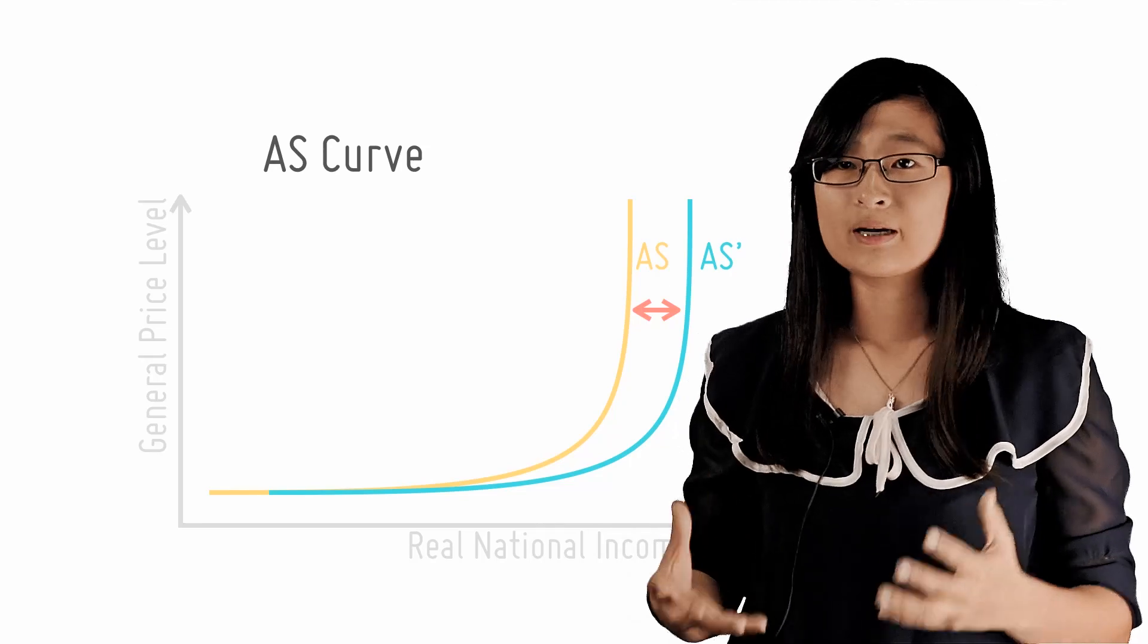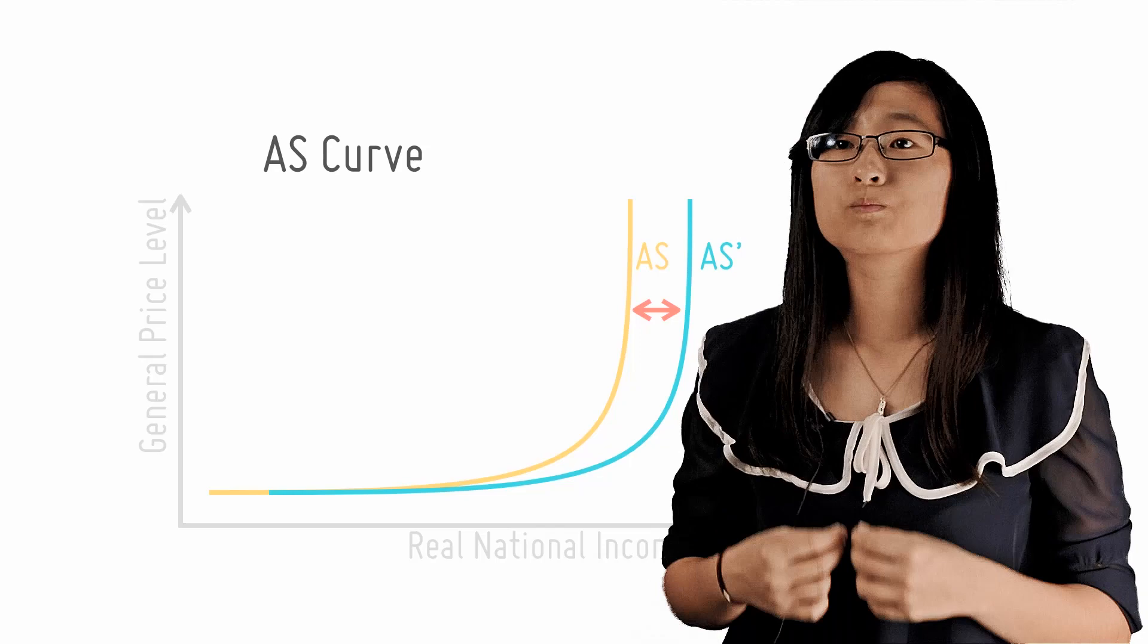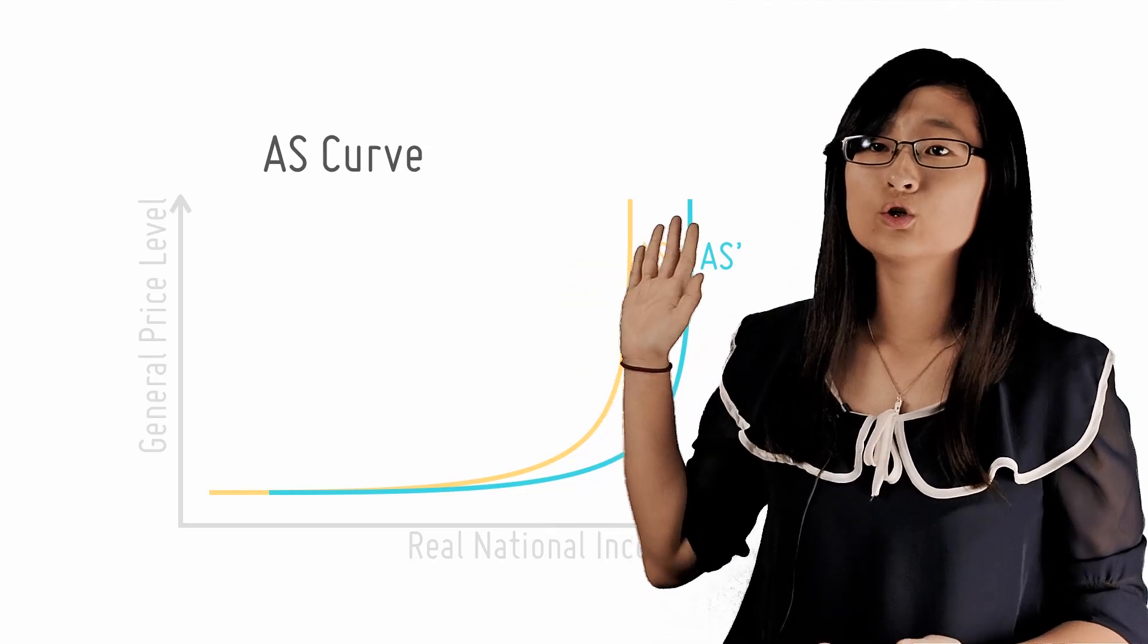So if a country has a sudden baby boom or it drastically improves its level of technology, it will increase its production potential and hence AS curve will shift to the right.